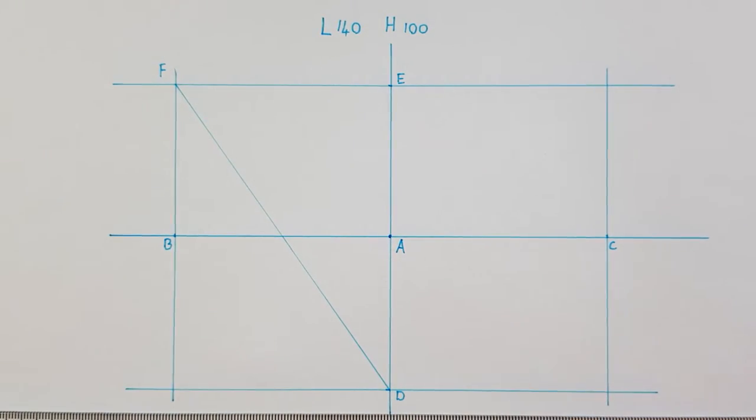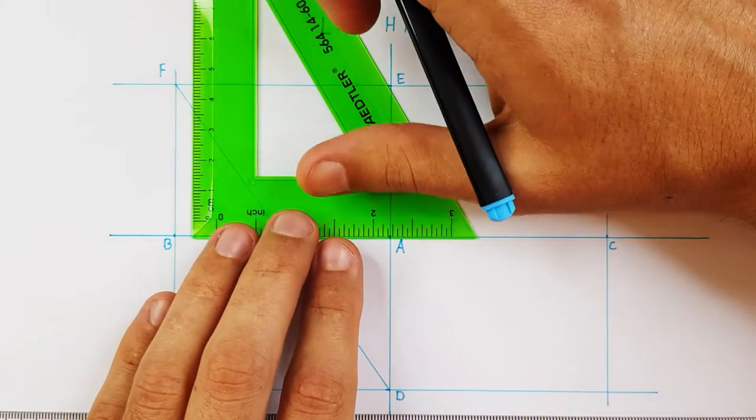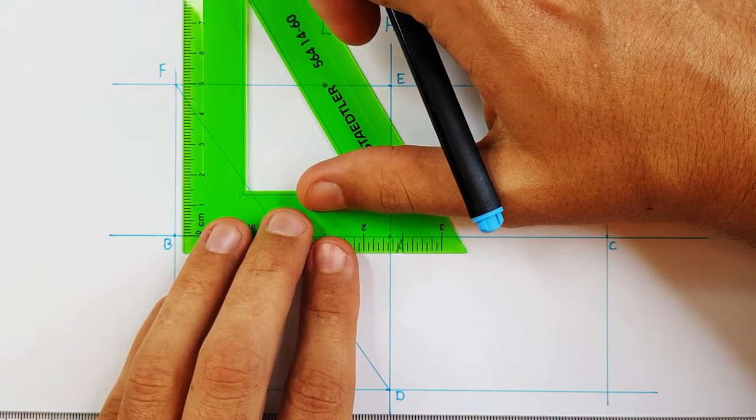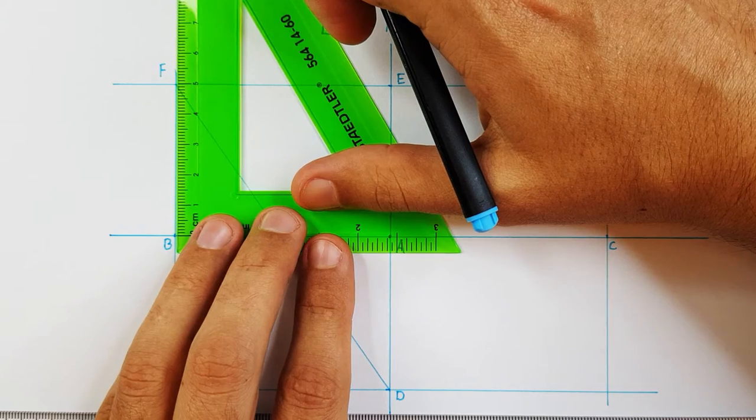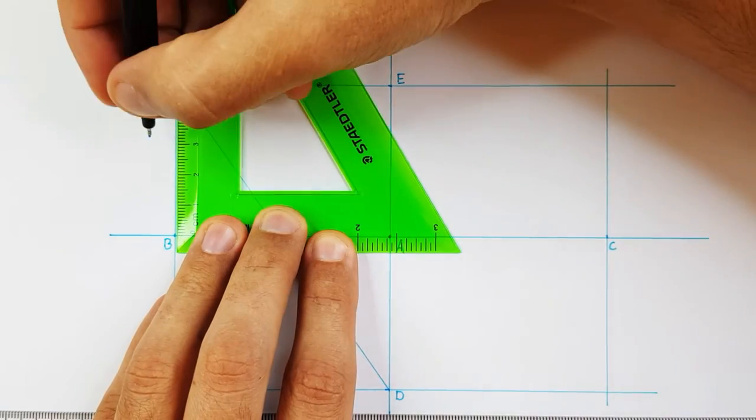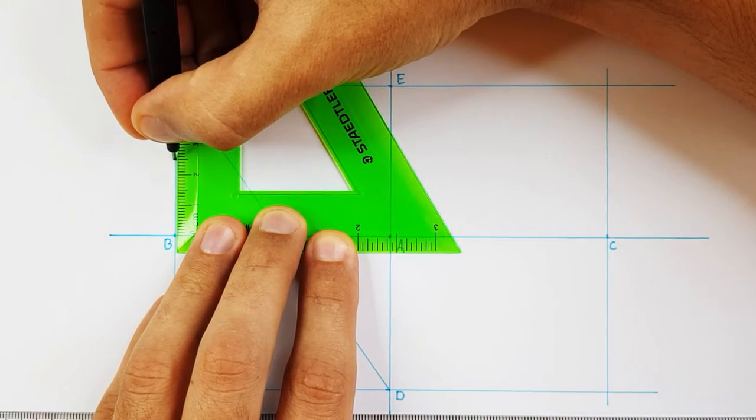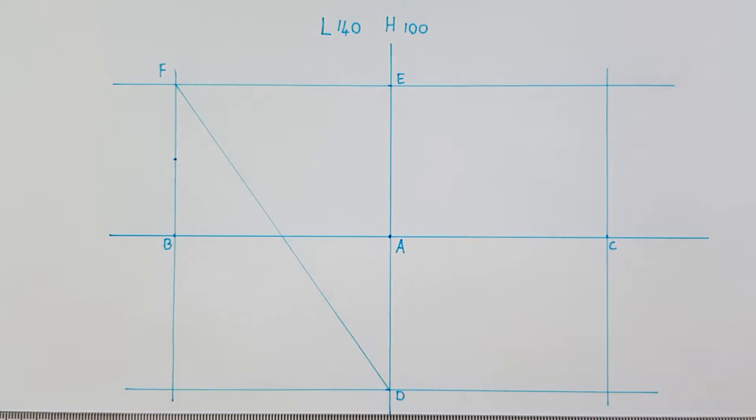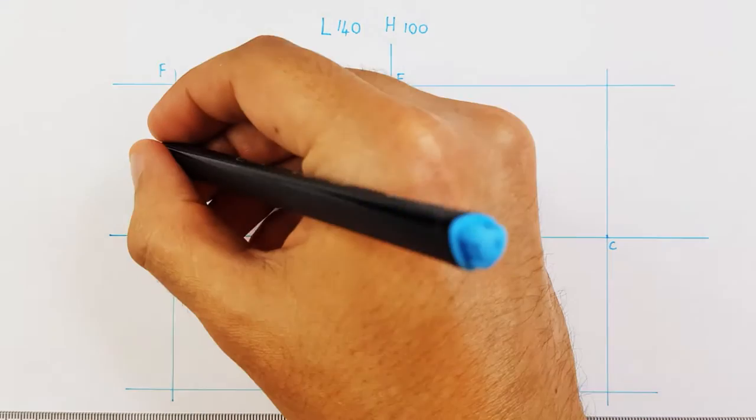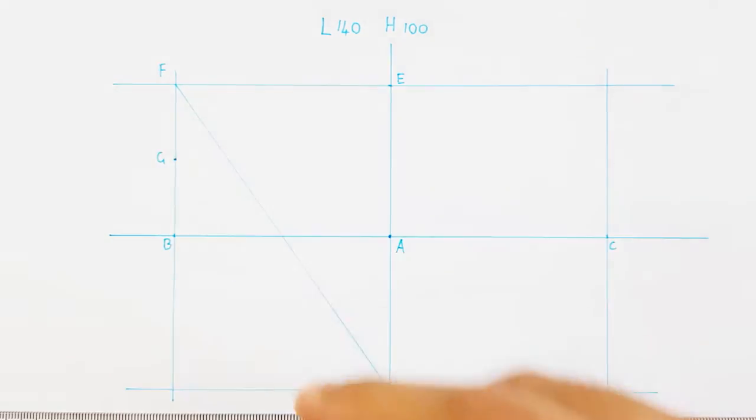You can then take your ruler and find the middle point between F and B. Alternatively, you can also apply the middle point method. You can label this point as point G.